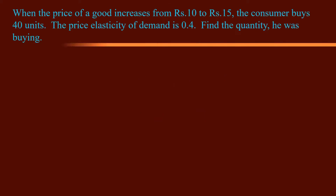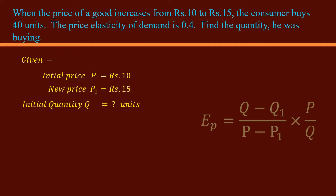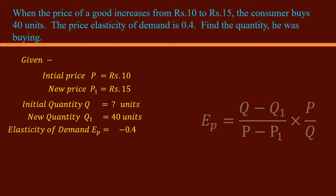The problem: When the price of a good increases from 10 rupees to 15 rupees, the consumer buys 40 units. The price elasticity of demand is 0.4. Find the quantity he was buying. State the given values. Initial price P: 10 rupees. New price P1: 15 rupees. Initial quantity Q: we have to find. New quantity Q1: 40 units. Elasticity of demand: minus 0.4.